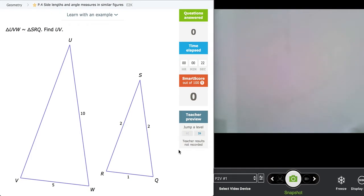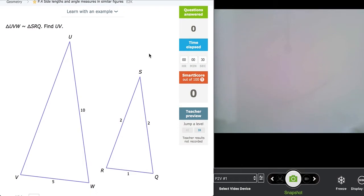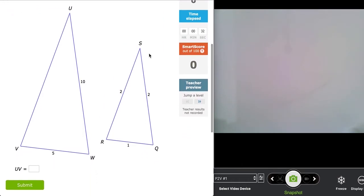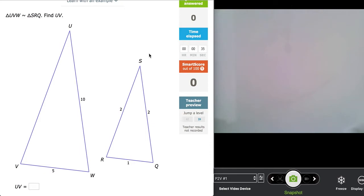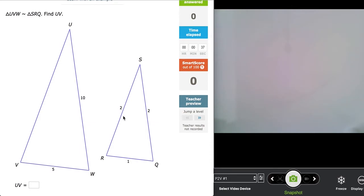Side lengths and angle measures in similar figures. We're going to take our understanding of similarity and use that to be able to find a missing measurement, whether that's an angle or a side measurement. So let's start with these two shapes here, these two triangles that are similar to each other.